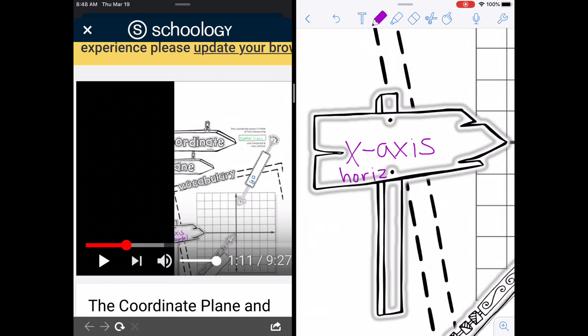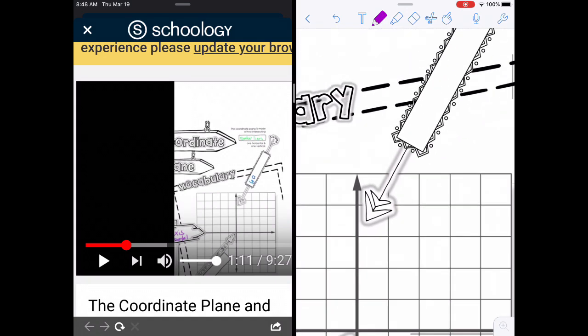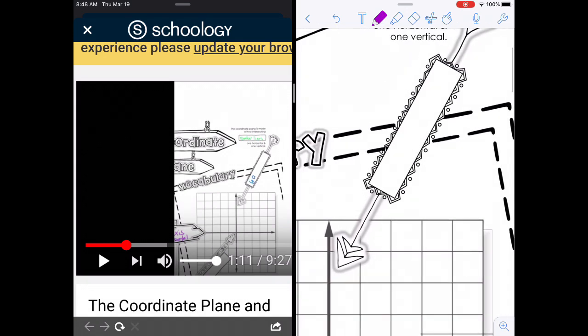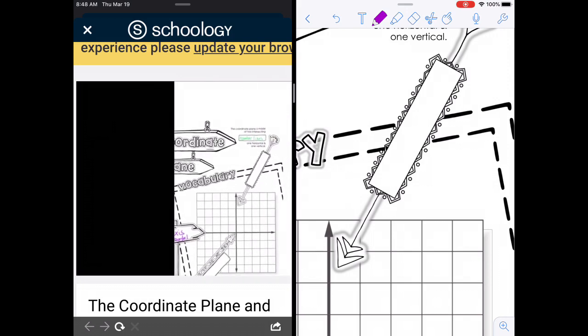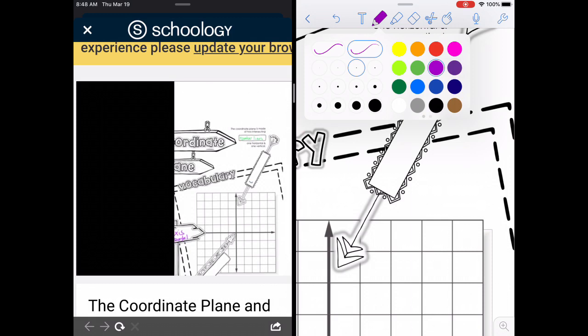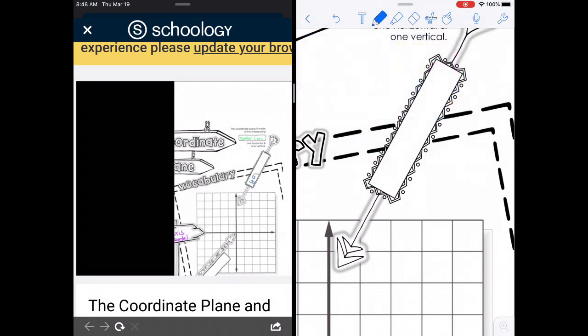So you can see I paused the video so I could catch up on the notes. And then I can go back and if I miss something I can actually rewind it some. And then our other one is our vertical, which is our y-axis.